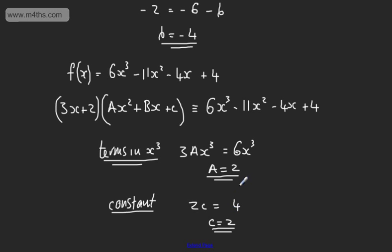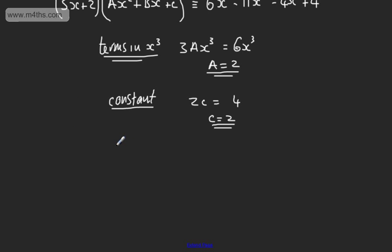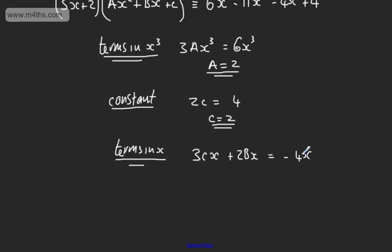At this stage we have a choice. I'm going to find the value of b by considering terms in x. On the left hand side we have 3cx plus 2bx, and that must equal minus 4x. So 3c plus 2b is equal to minus 4. We know c equals 2, so 3 lots of 2 is 6. Therefore 6 plus 2b equals minus 4. Subtracting 6 and dividing by 2, b is equal to minus 5.